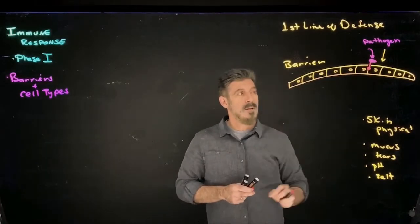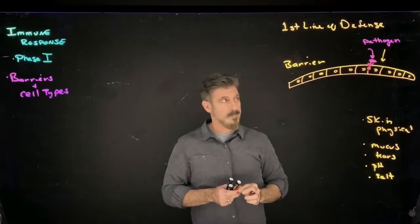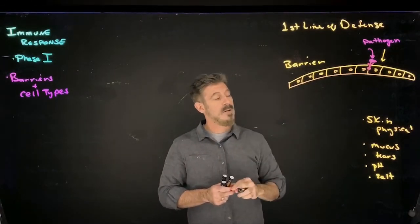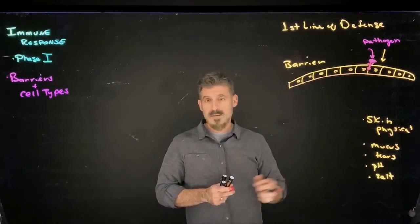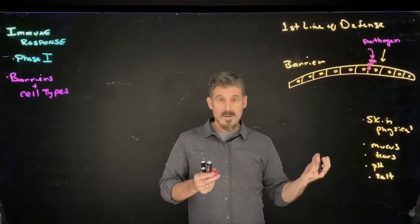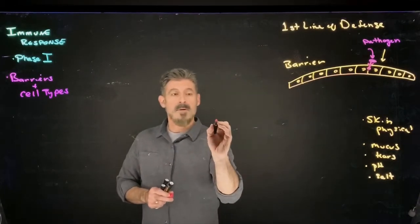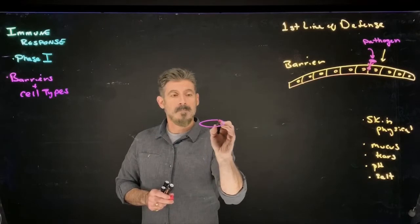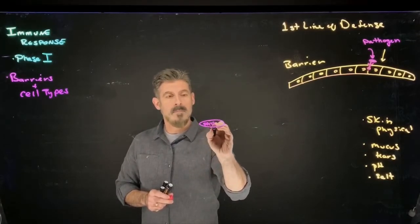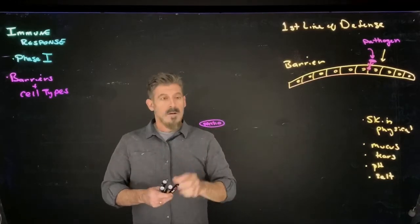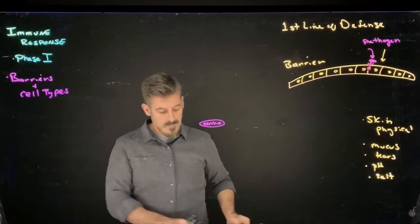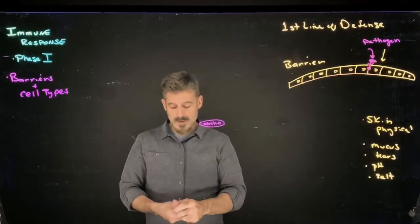Now if that pathogen manages to get itself into the tissue, it can get past the physical barriers if there's a scratch or cut on the skin, or it bypasses these and isn't harmed by them, then it will begin to encounter an immune response. So this is the pathogen.